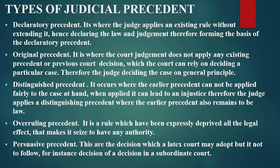The judge may choose to adopt a distinguished precedent. Overruling precedent: it is a rule which has been expressly deprived of legal effect and may cease to have any authority. So an overruling precedent is a precedent which has been deprived of authority.